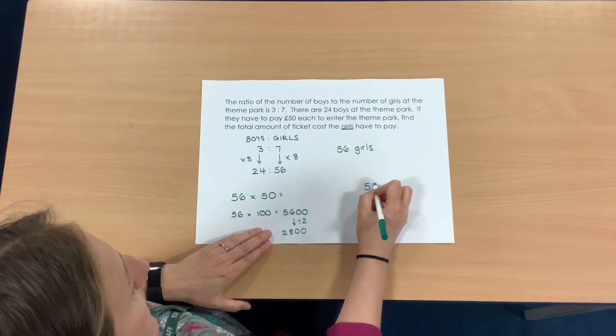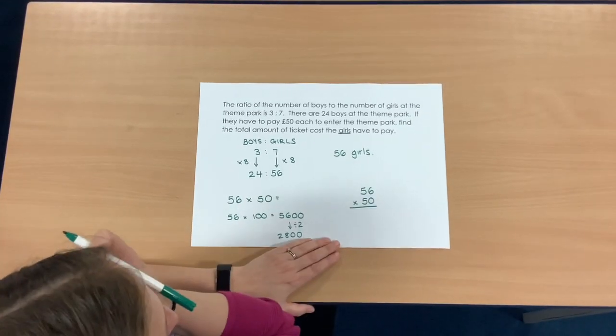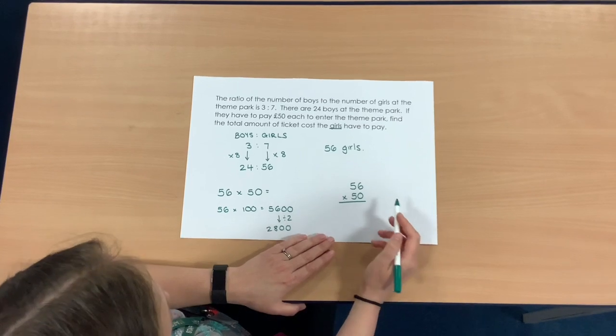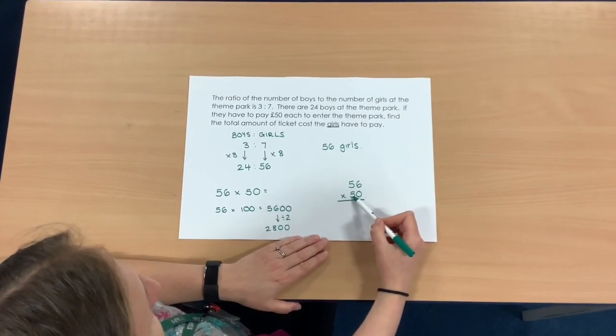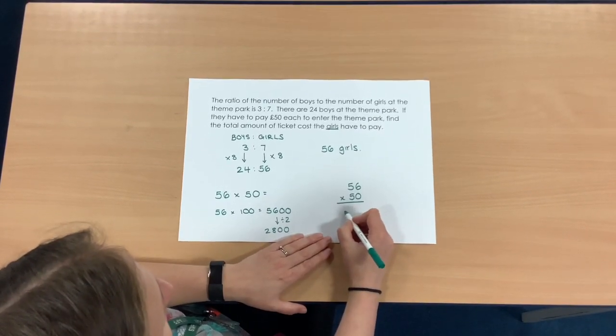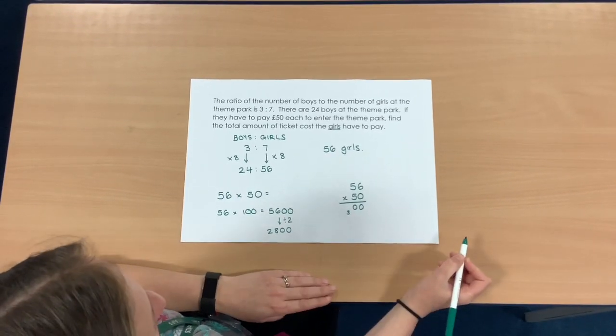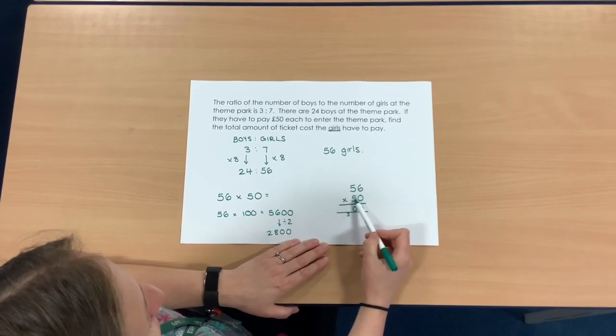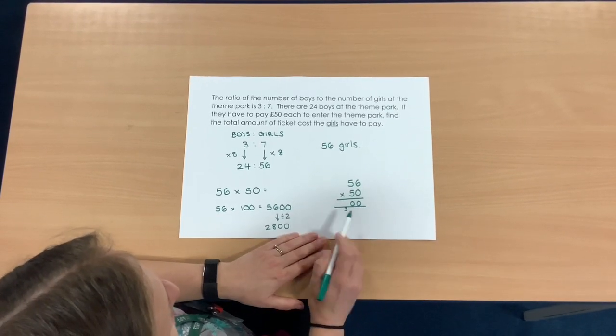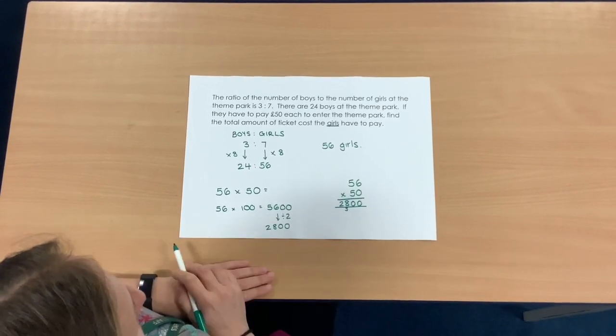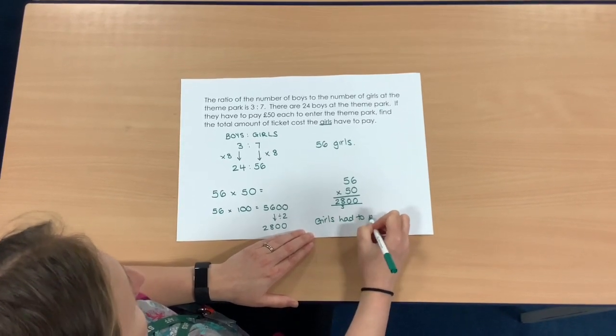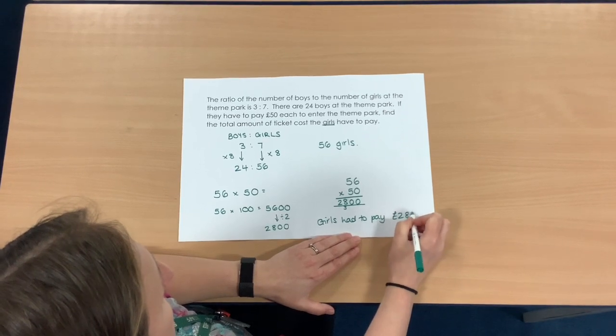Or you could have said, well I know how to do multiplication in a written method, so I'm going to do it like this. So I've got 0 times 6 and 0 times 5 there. And then I've got 5 tens times 6. Well 5 tens times 6, 50 times 6 is 300. So I've got 3 in my hundreds, I've got no tens, and I've got no ones. I've then got 5 tens times 5 tens. So that gives me 2,500s, and I've already got my 3 giving me 28. So either way you get the answer 2,800, which means the girls had to pay a whopping £2,800 altogether.